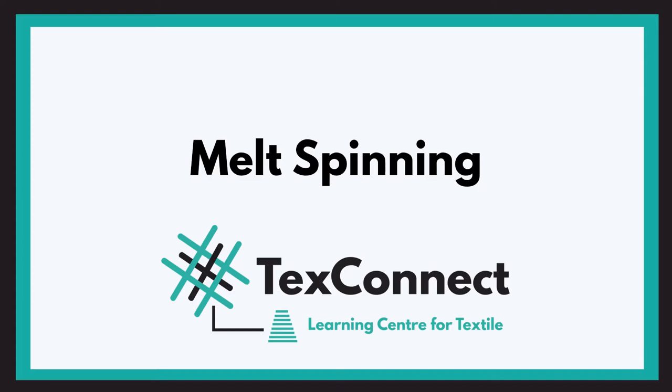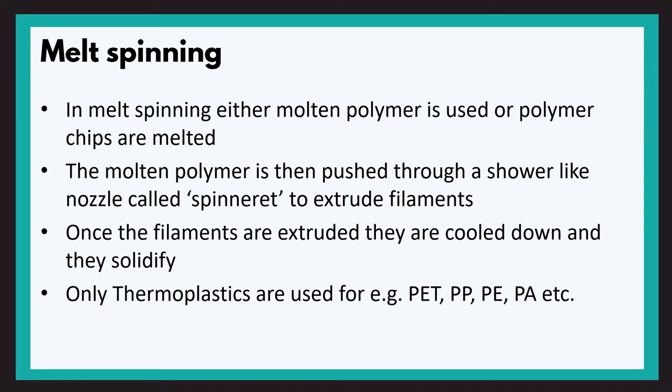Welcome to Text Connect, a learning center for textiles. Today we will be starting with a very important and interesting topic in synthetic fiber production. The topic for today is melt spinning. As the name suggests, in melt spinning the polymer is melted to the required viscosity, and then this molten polymer is pushed through a shower-like nozzle known as a spinneret, where the filaments are extruded. Once extruded, they are drawn to the required orientation and then cooled down.